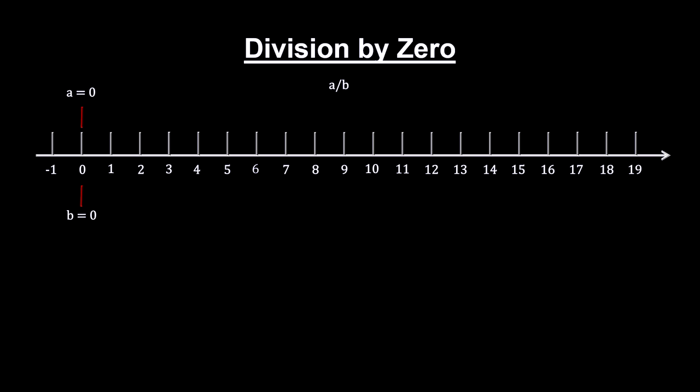Now, if a is zero, we're asking what number, when multiplied by zero, would give us zero. The answer is any number at all, because any number multiplied by zero would give us zero.